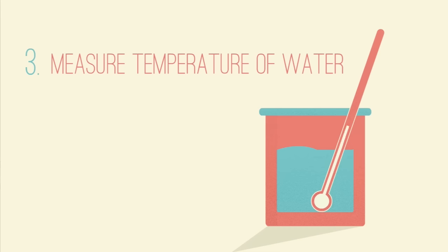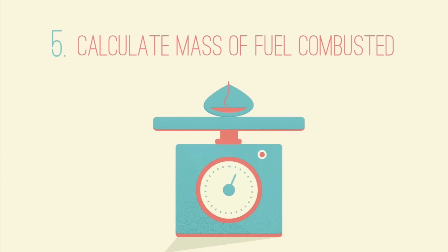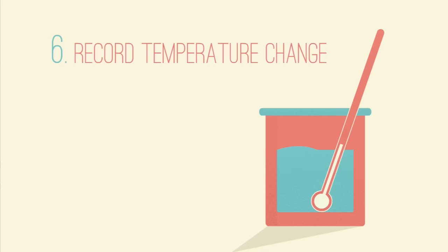3. You would measure the starting temperature of the cold water. 4. You would use the spirit burner to heat the water for a fixed amount of time. 5. Record the mass of the burner afterwards so that you could calculate the mass of the fuel combusted. 6. Record the temperature change of the water caused by heating.